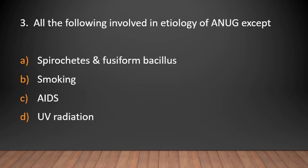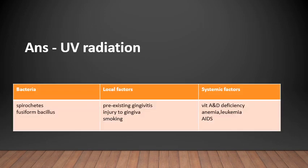MCQ 3: All of the following are involved in the etiology of ANUG except — spirochetes and fusiform bacillus, smoking, AIDS, or UV radiation? Answer: UV radiation. Etiology of ANUG includes bacteria such as spirochetes and fusiform bacillus. Local factors include pre-existing gingivitis, interdental gingiva, and smoking. Systemic factors include vitamin A and D deficiency, anemia, leukemia, and AIDS.